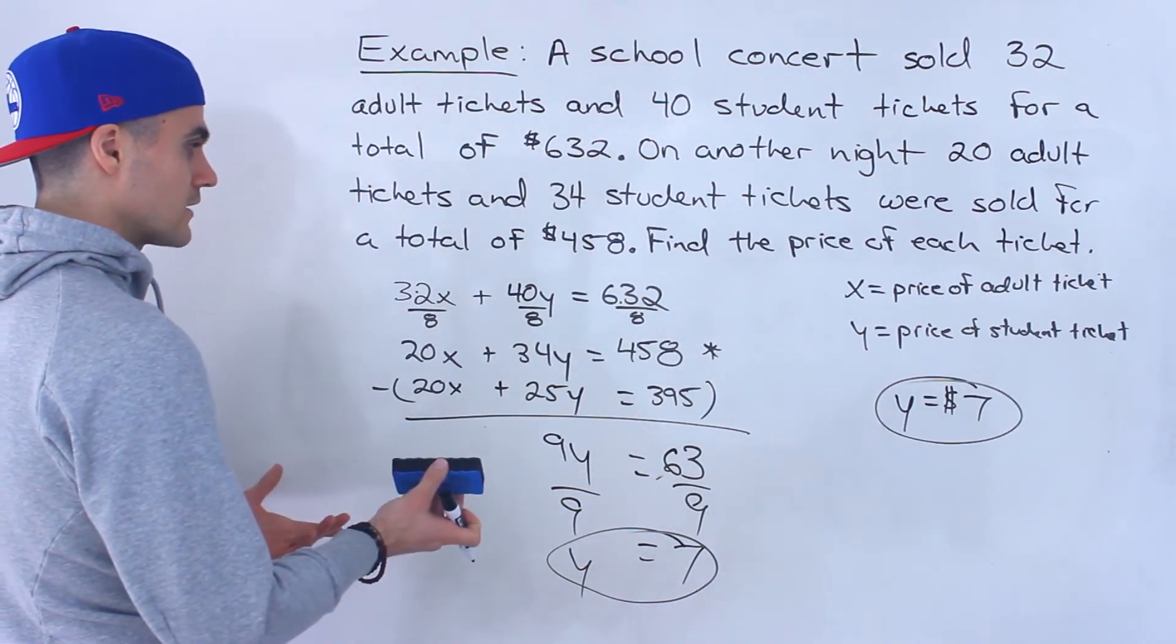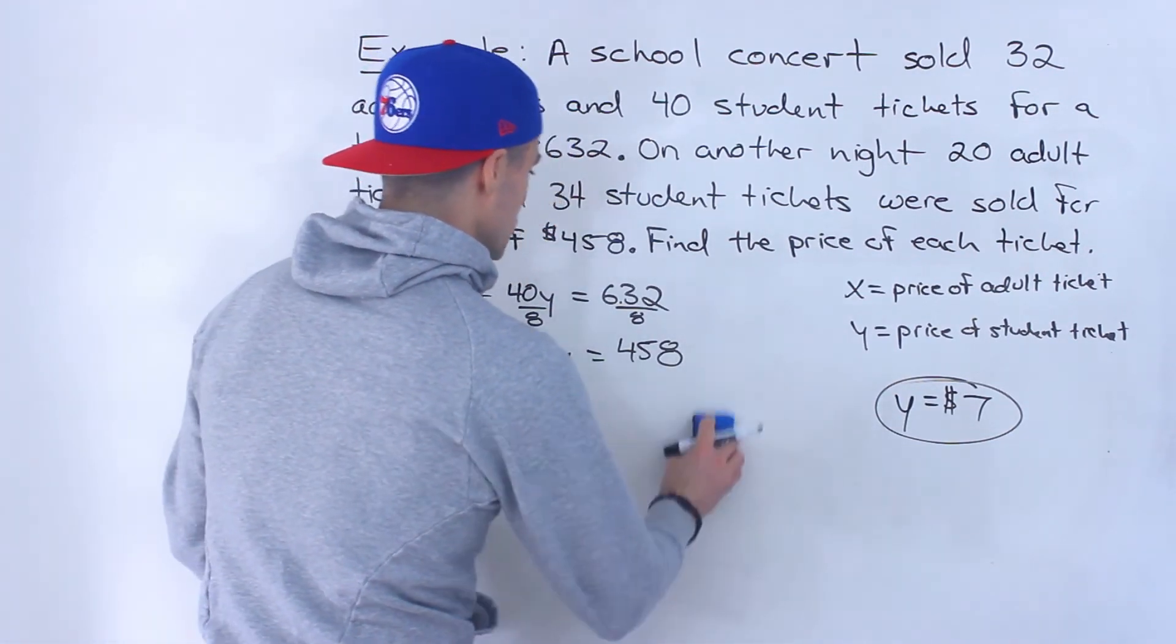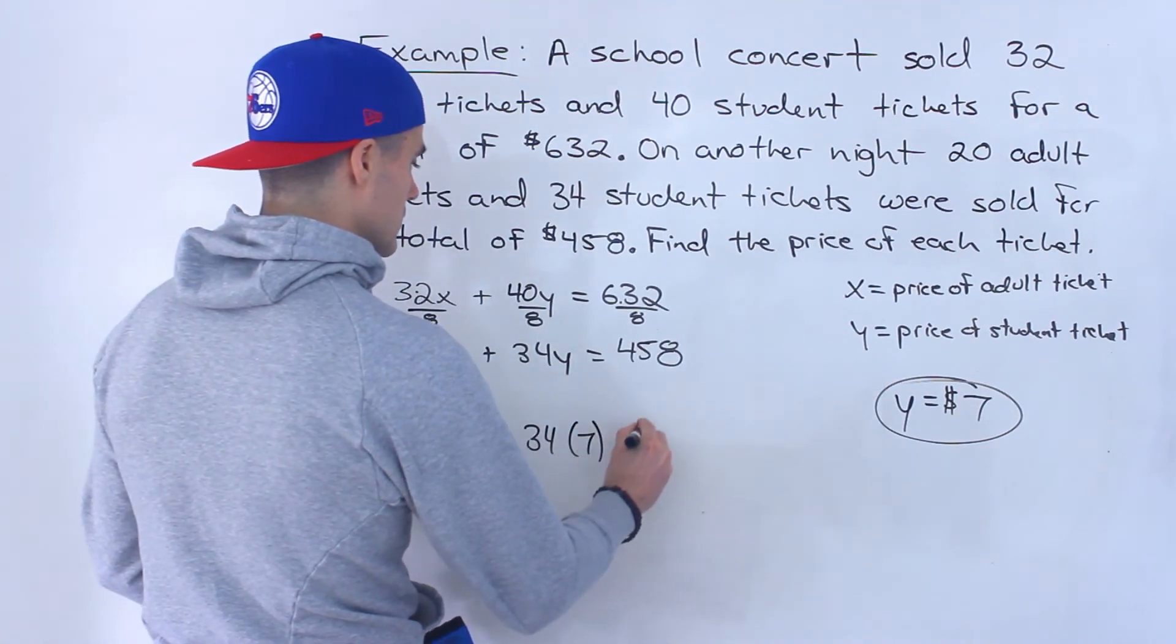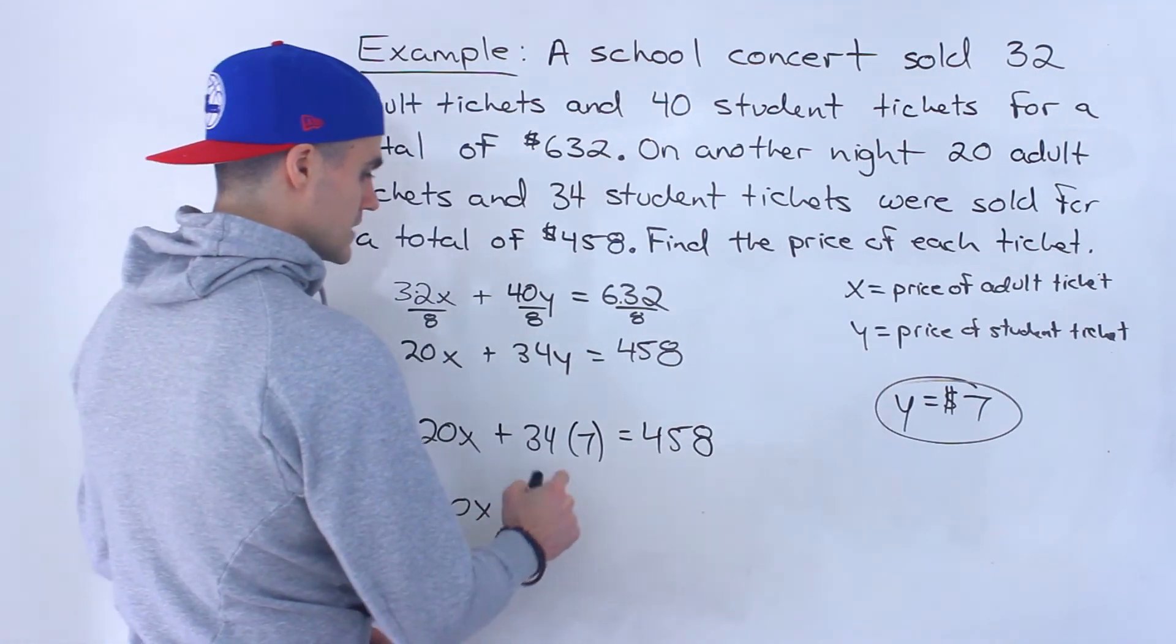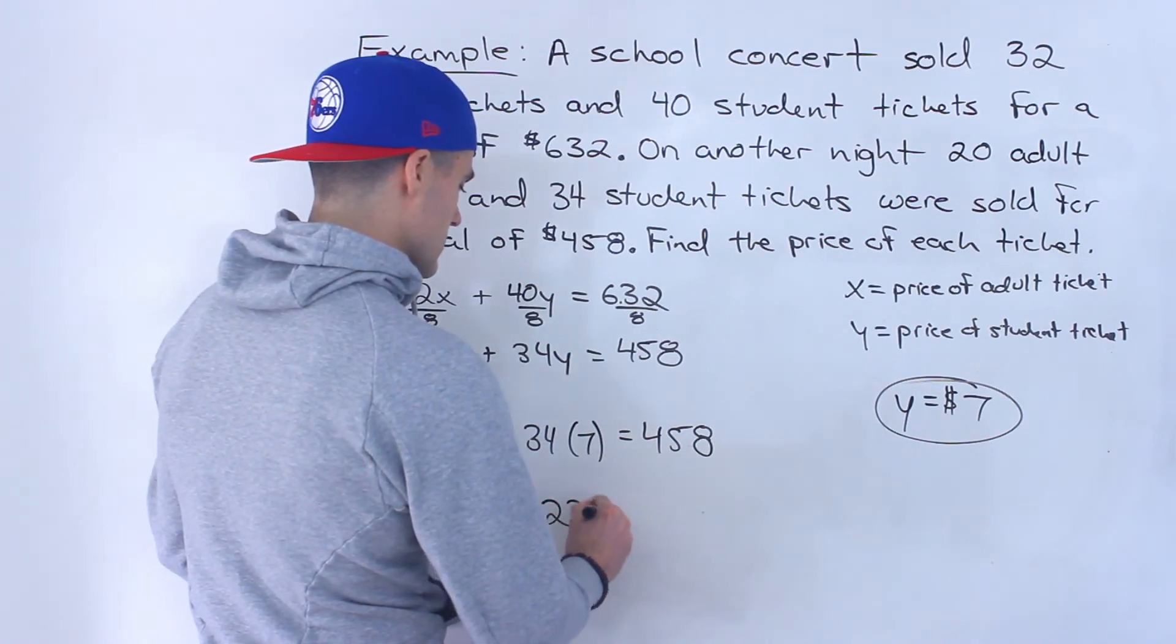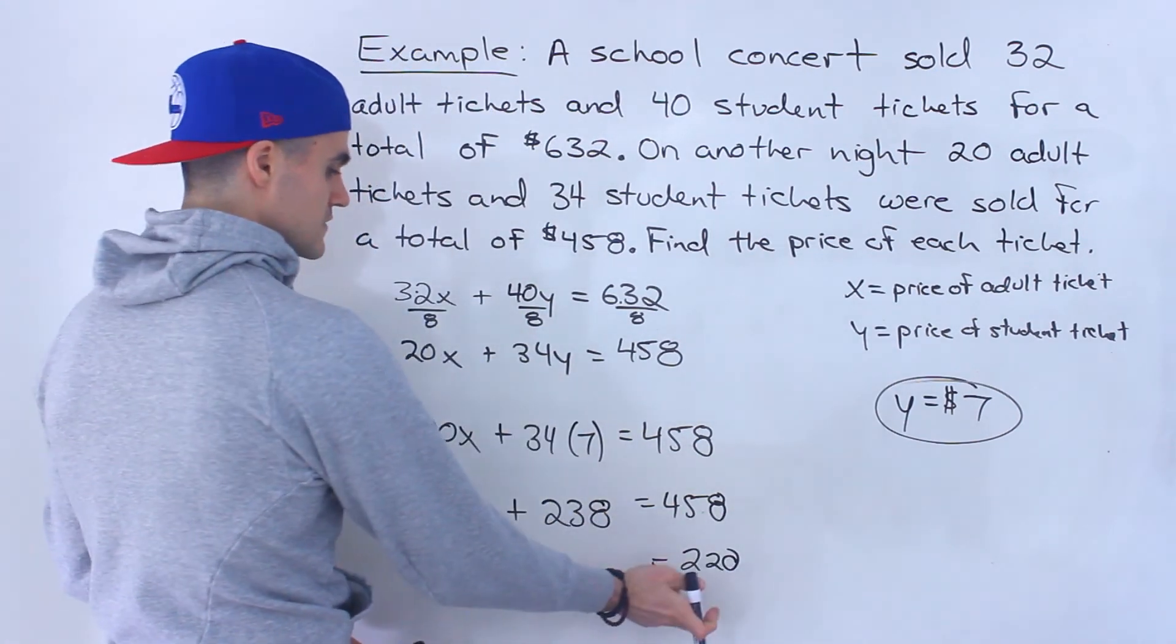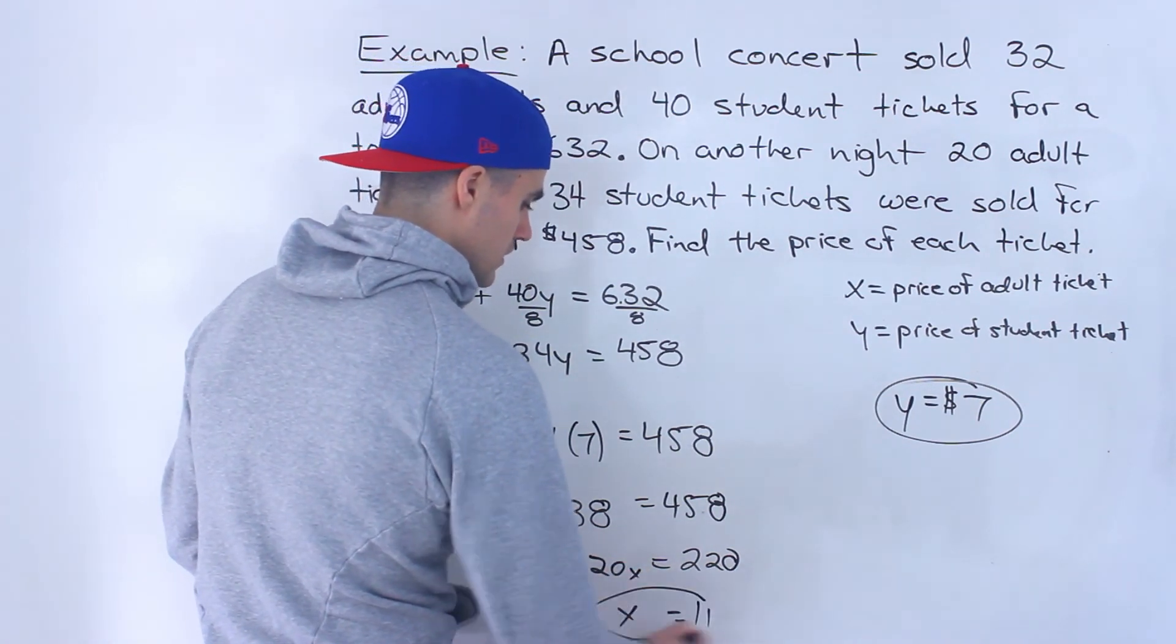And now if we want to get the corresponding X value, we could plug it into either of the original equations. So I'm going to actually plug it into this one. So I'll have 20X plus 34 times 7 equals 458. So we'll have 20X plus this over here would give us 238. And then we'll have 220 when we bring the 238 over, 458 minus 238 gives us 220. 20X, divide both sides by 20. X would be 11.